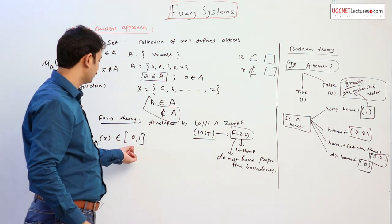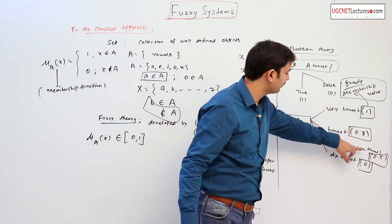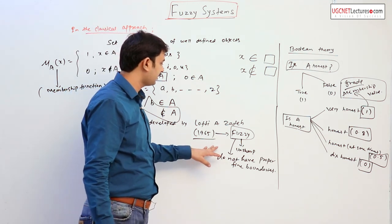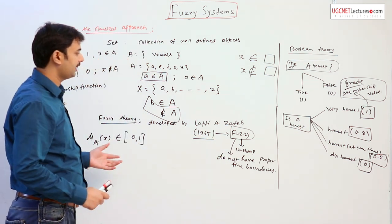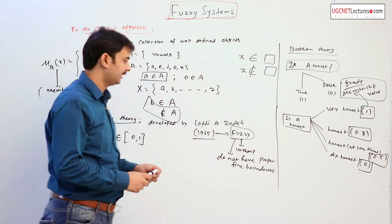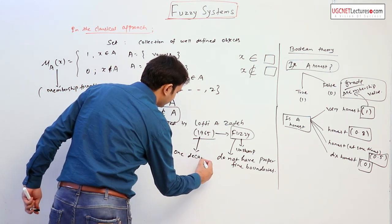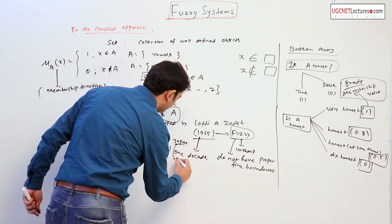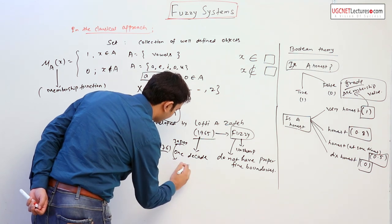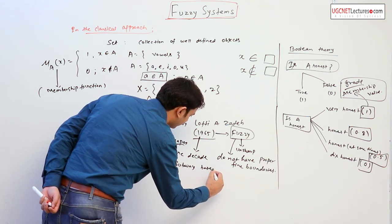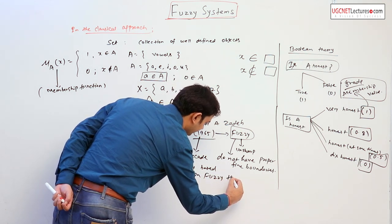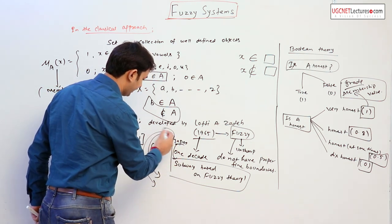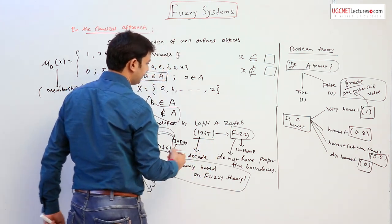When Zadeh proposed the fuzzy theory, many people at that time did not agree with it. But later on, Japan, after about one decade — meaning around 1976 — first manufactured or built a subway based on fuzzy theory. Then later on, many countries accepted this theory and developed many applications of it.